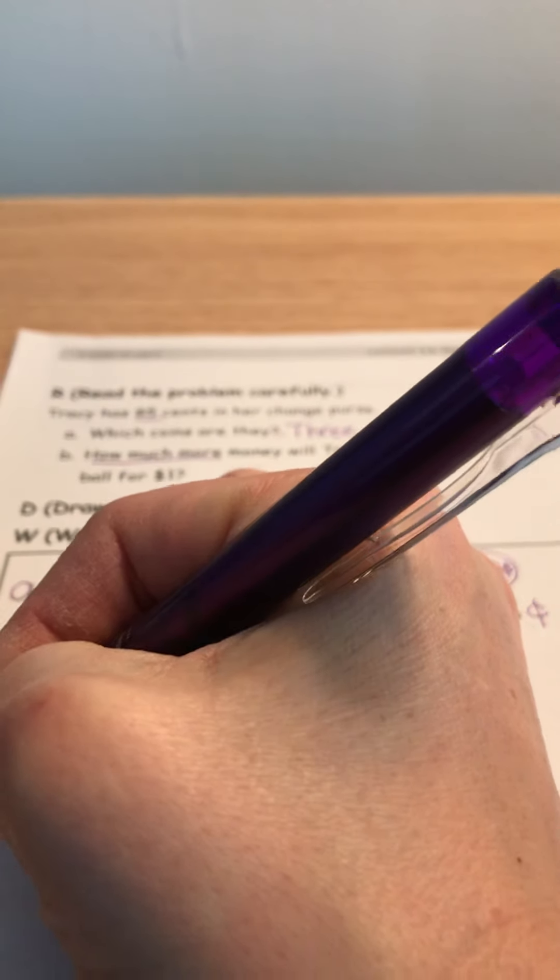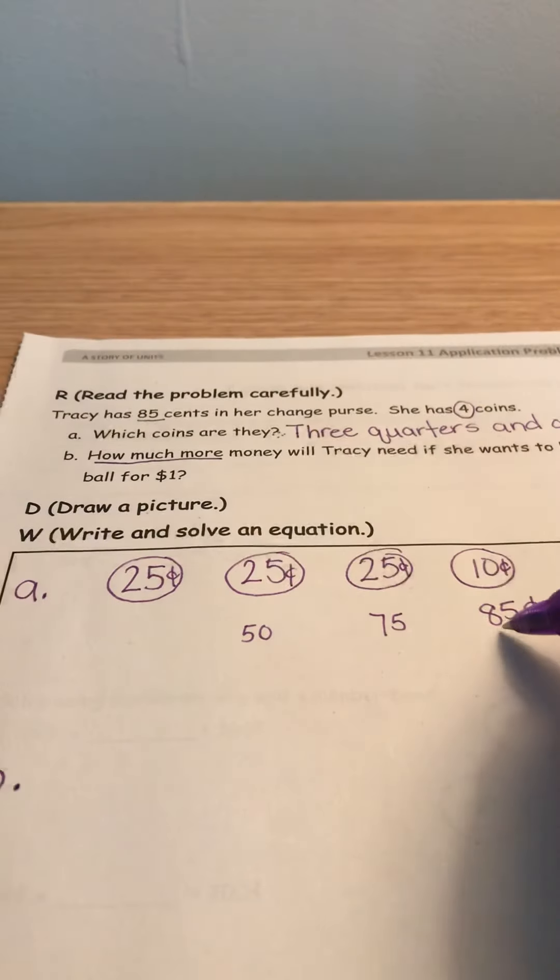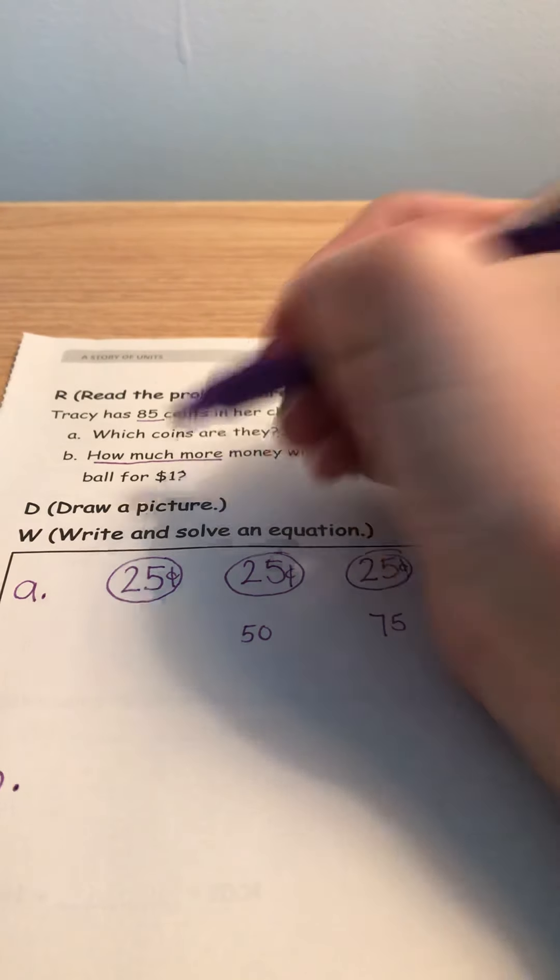It tells us that we either need to count on or subtract to find the difference between the two. I think it's easier in this case to subtract. So we have 85 cents already, but we want to get to $1.